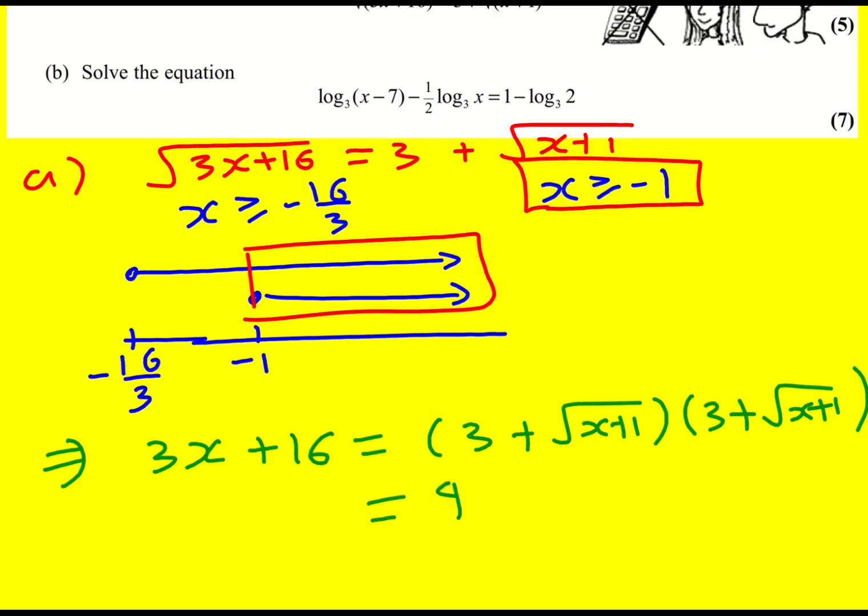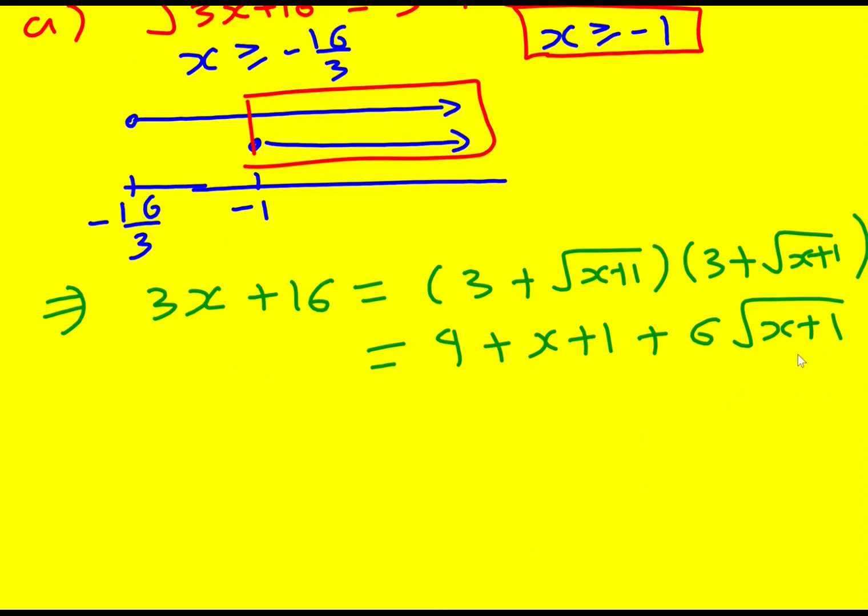I'm going to get 9. I'm going to multiply these two terms, it's going to give me x plus 1. And then I'm going to get 3 lots of x plus 1 square rooted, and another 3 lots. It's going to be 6 lots of x plus 1 square rooted. I haven't managed to get rid of the square roots overall. So just tidy this up. 3x plus 16 is going to equal x plus 10 plus 6 times the square root of x plus 1.